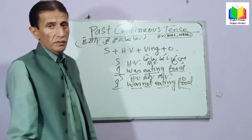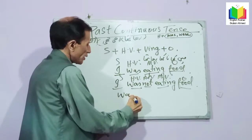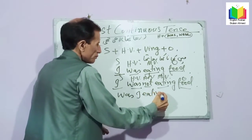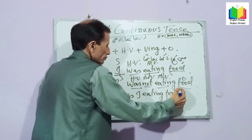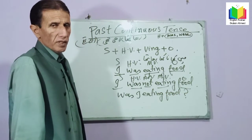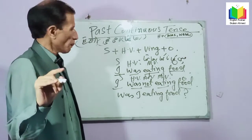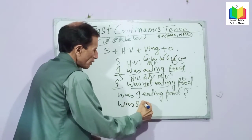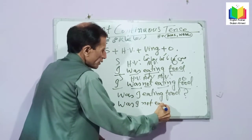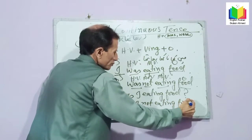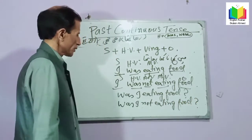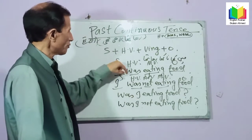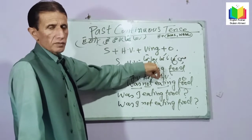I was not eating food — 'I' is the subject, 'was' is the helping verb, 'not' is the adverb, 'eating' is the main verb, and 'food' is the object. If we want to change it into interrogative, 'was' comes out: Was I eating food? And for interrogative negative: Was I not eating food? You can also say: Wasn't I eating food?